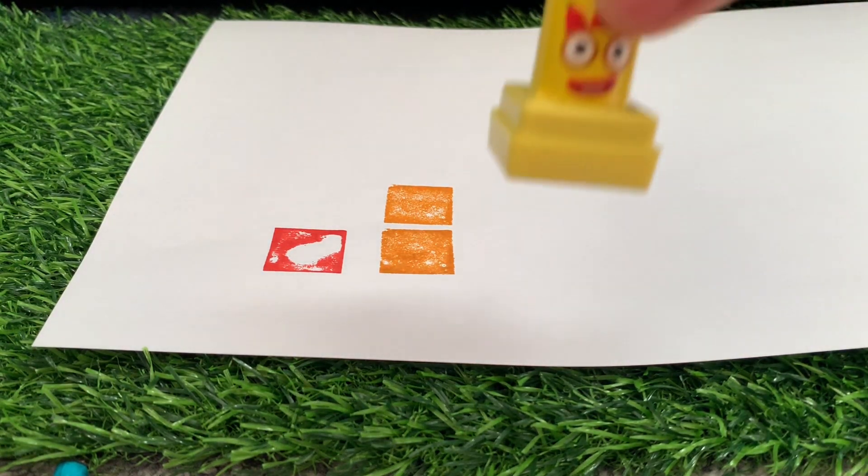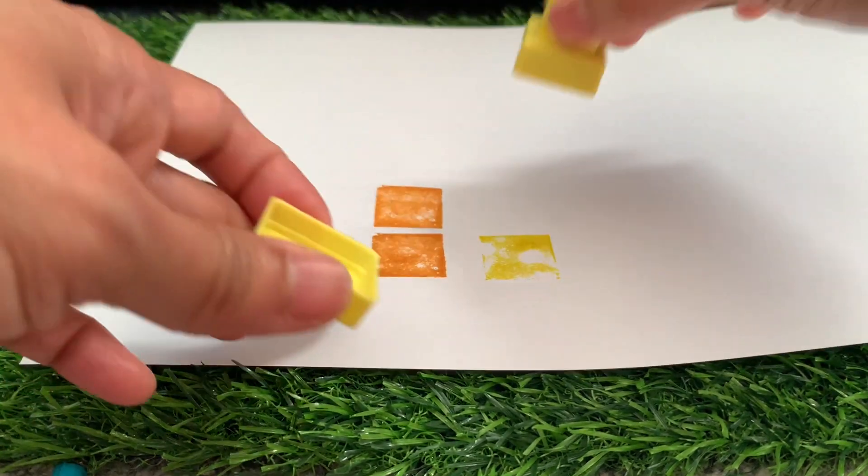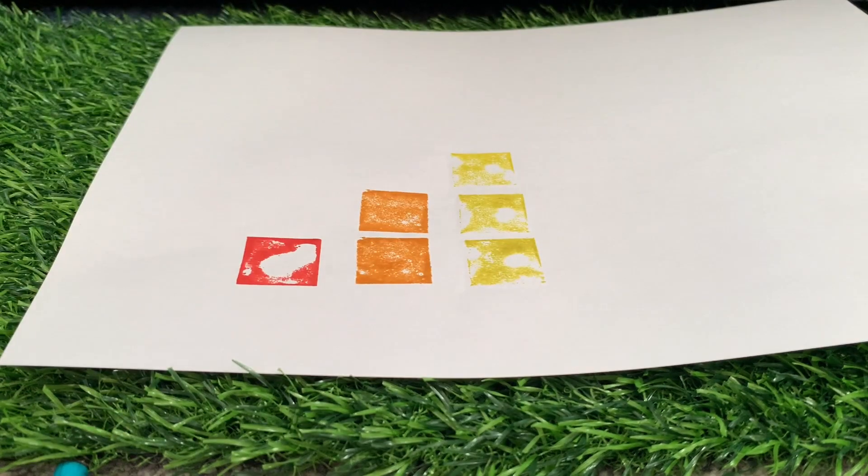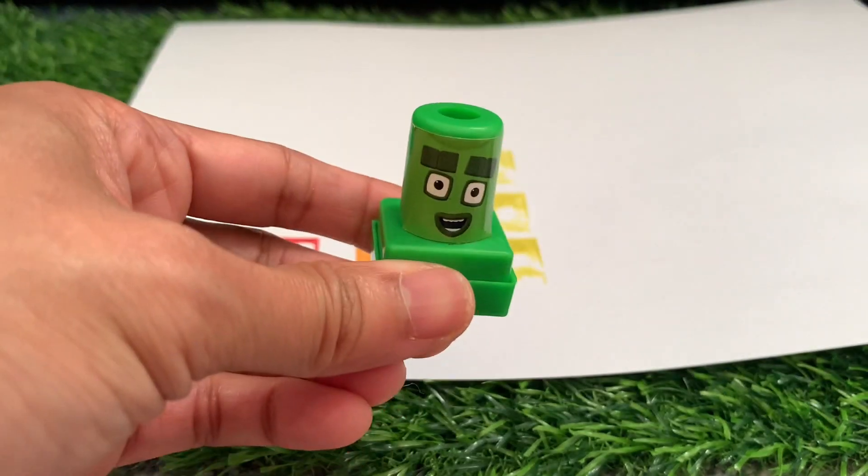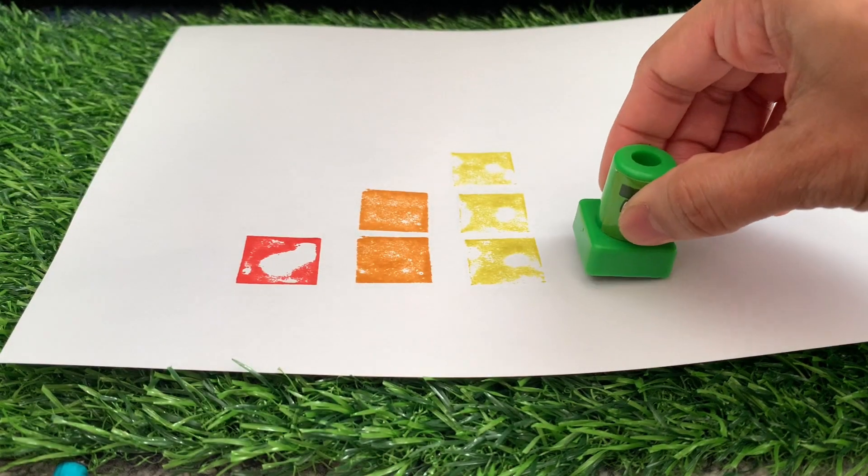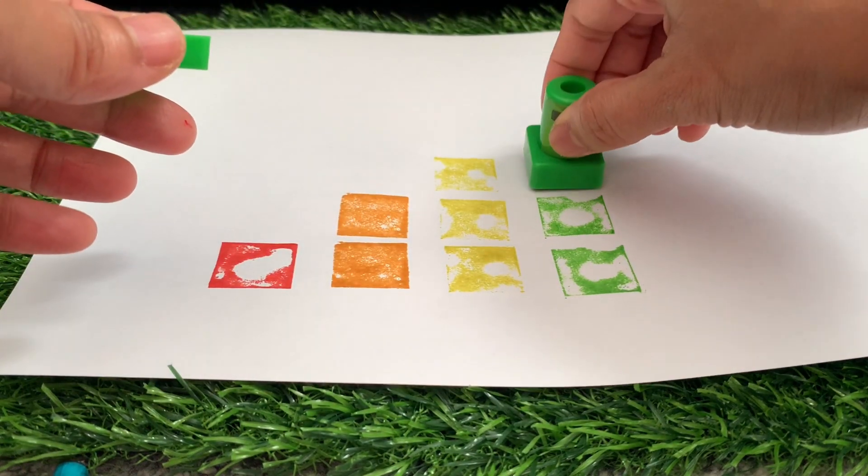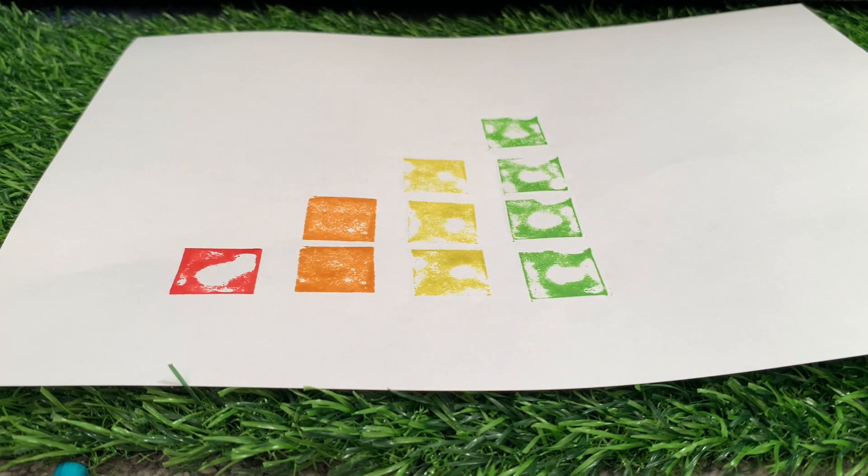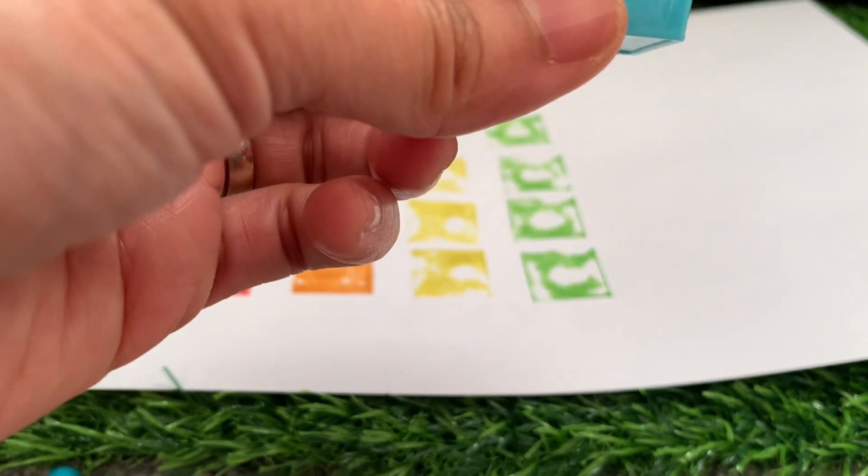Now let's try number blocks three. One, two, and three. Color yellow. And let's check number blocks four. One, two, three, and four. Color green. And now lastly, number blocks five, color blue.